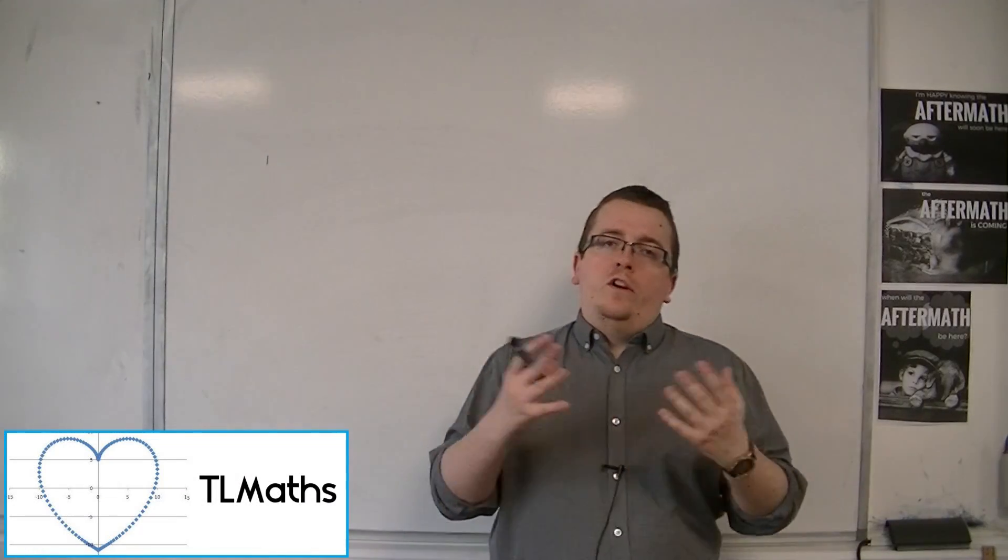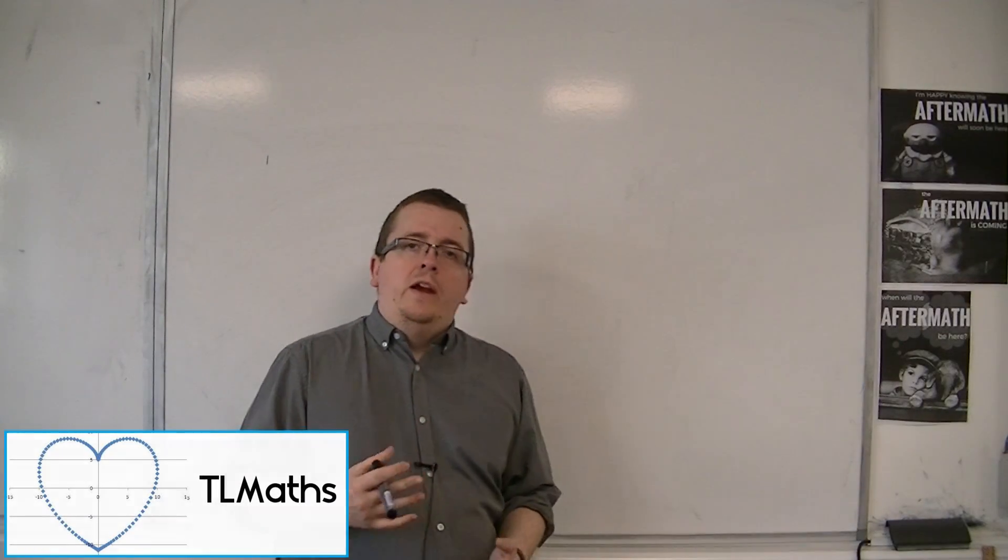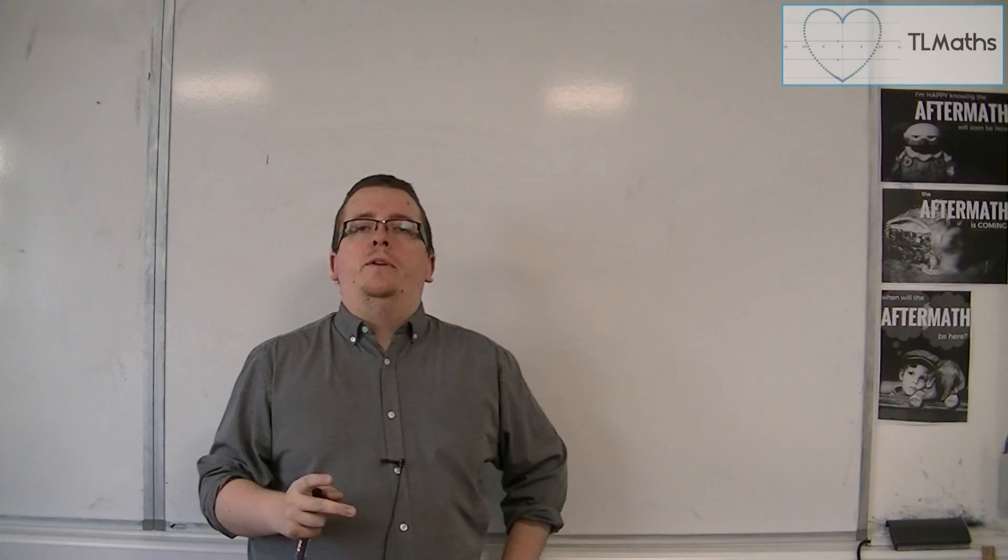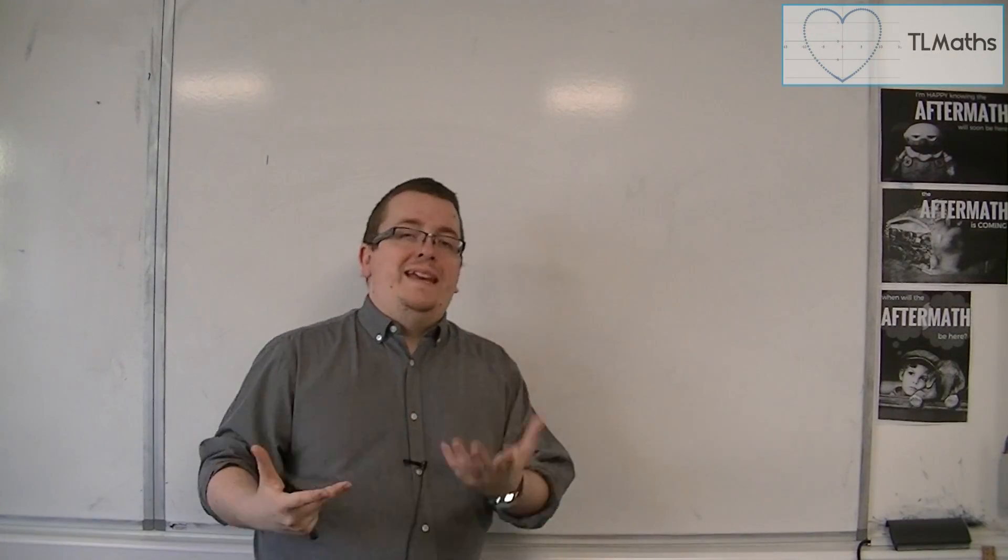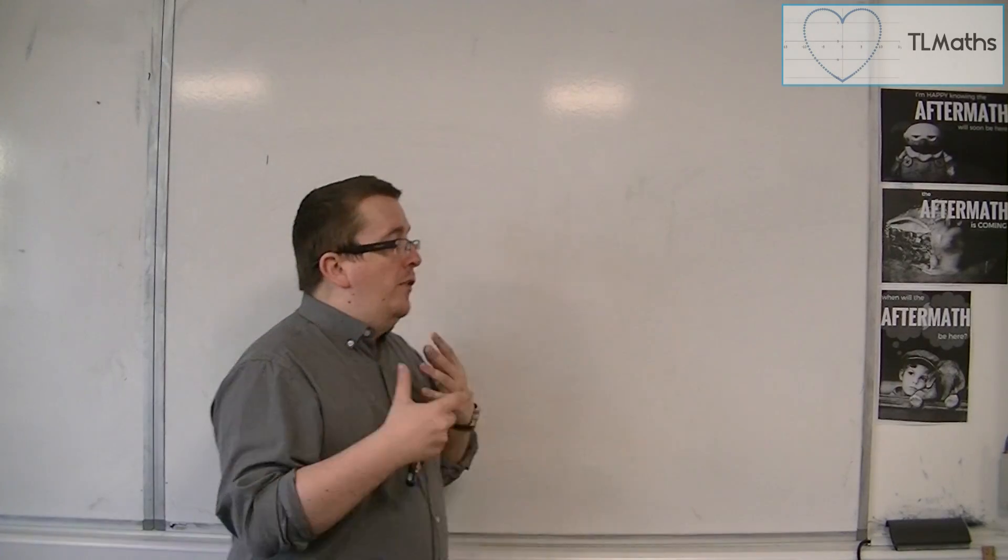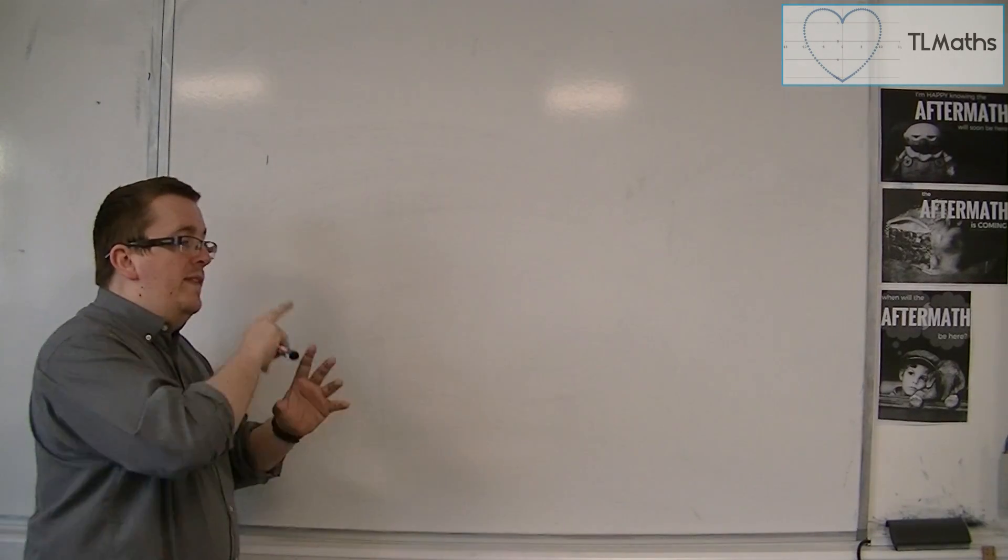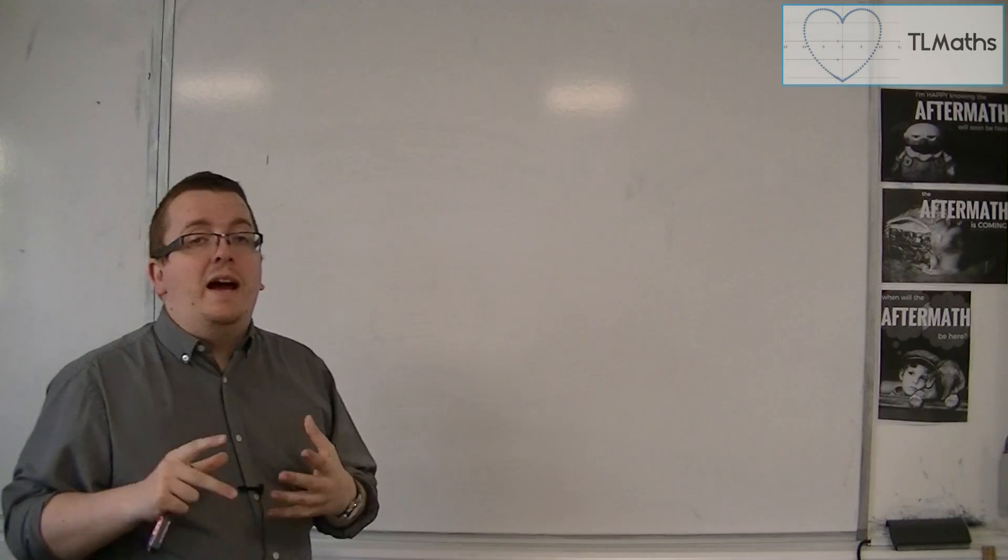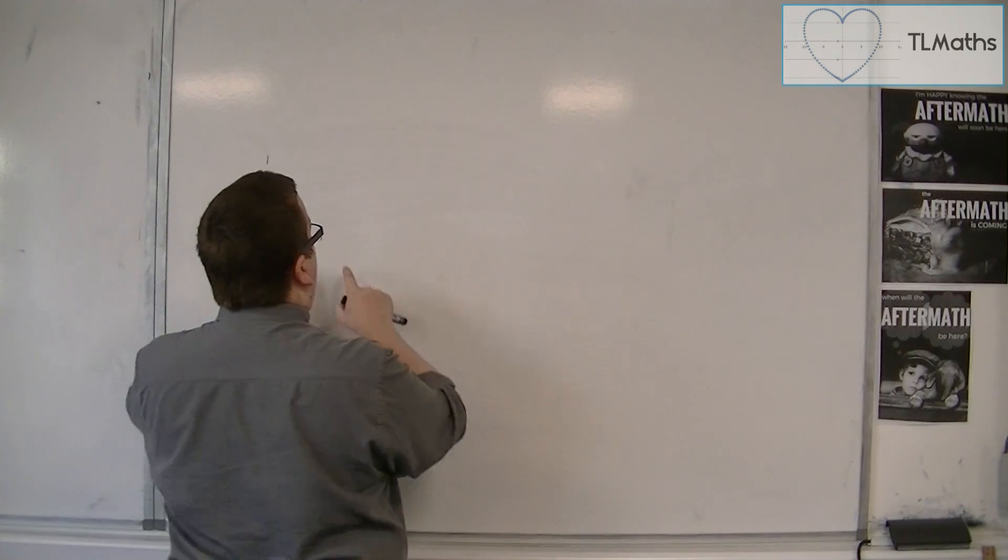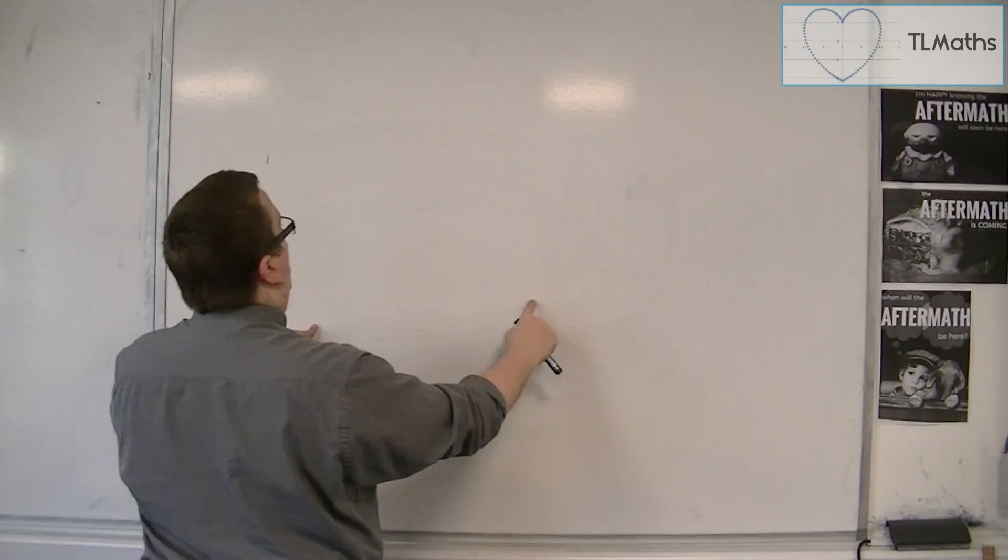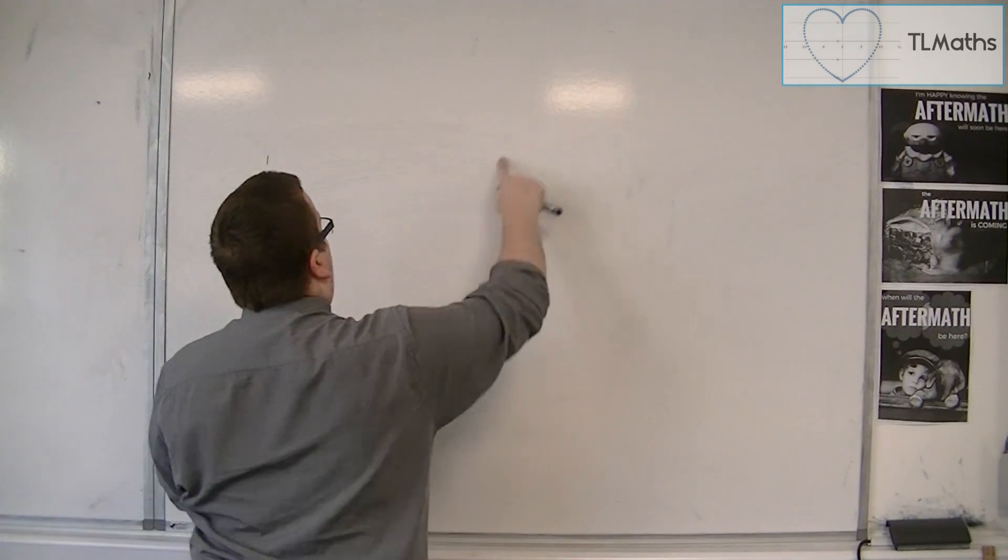In 2D, when I draw two straight lines, only two things can happen. Either they are parallel or they intersect. So if I draw two straight lines on this whiteboard, they are either going to be parallel or they are going to intersect.